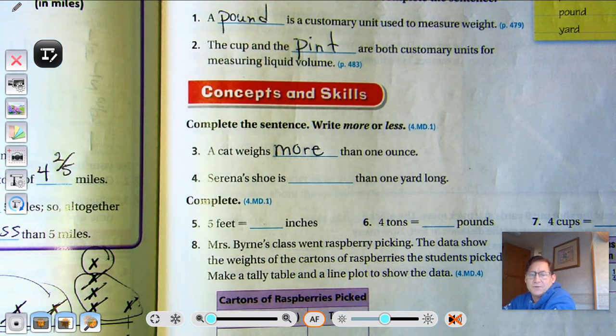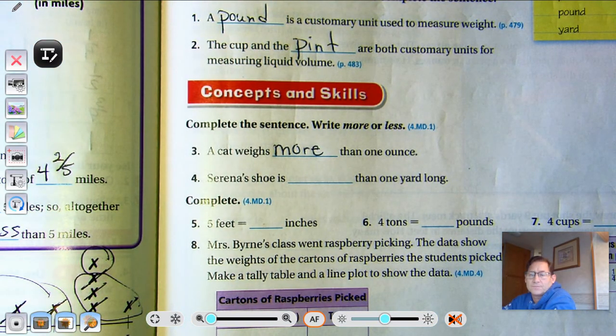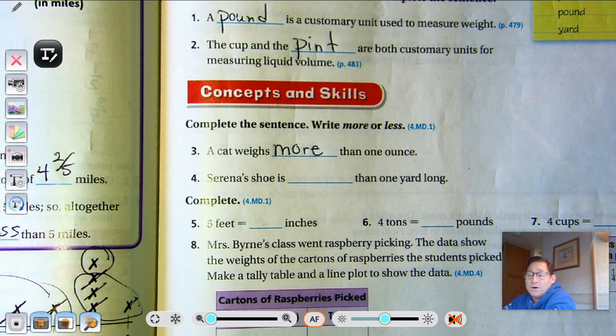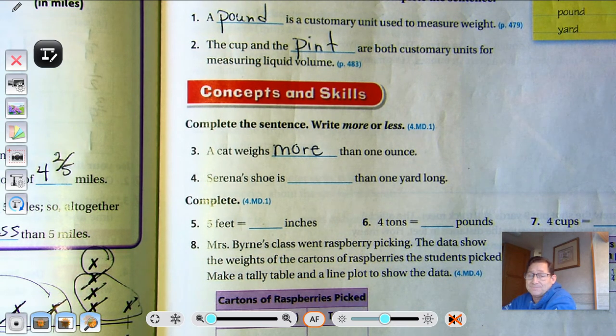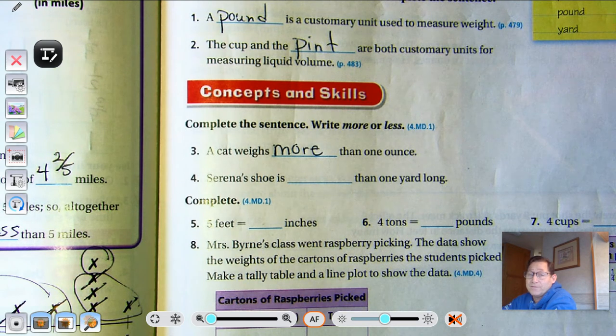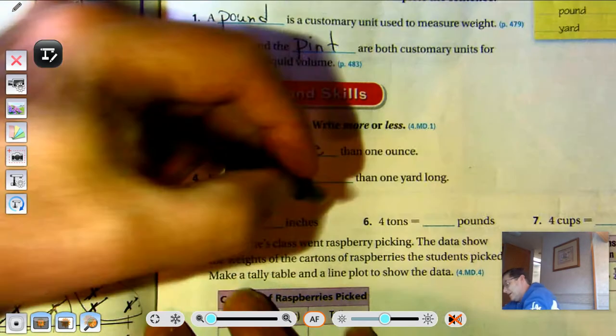Serena's shoe is blank than one yard long. Well, our benchmark for one yard was a baseball bat. That would be a really big shoe if her shoe was as long as a baseball bat. I'm going to say less.